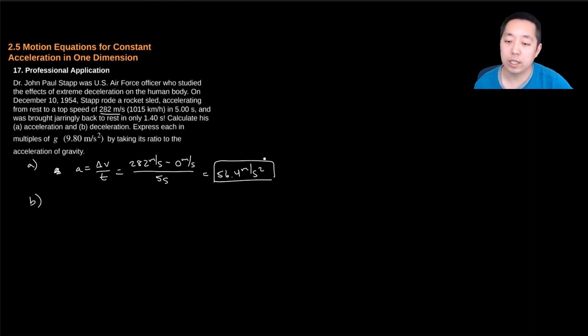Okay, so in terms of how many G's that is, you just divide this by 9.8, and you can get it as a ratio of 5.76 G's, or 5.8 G.